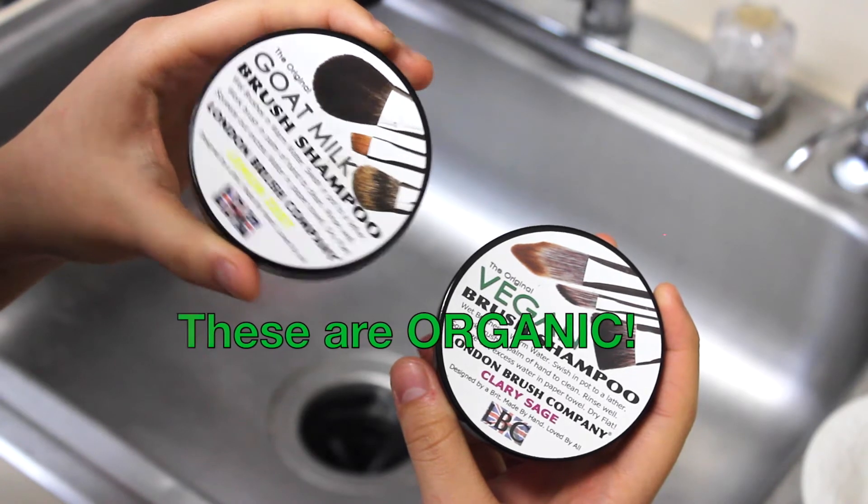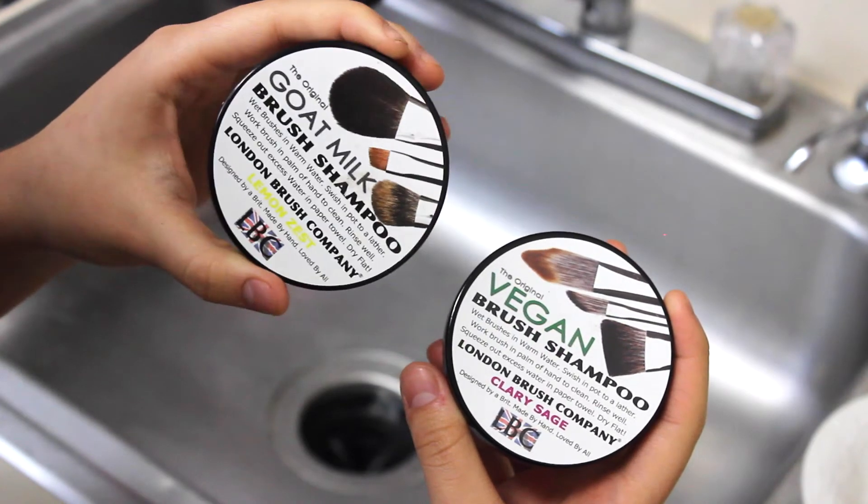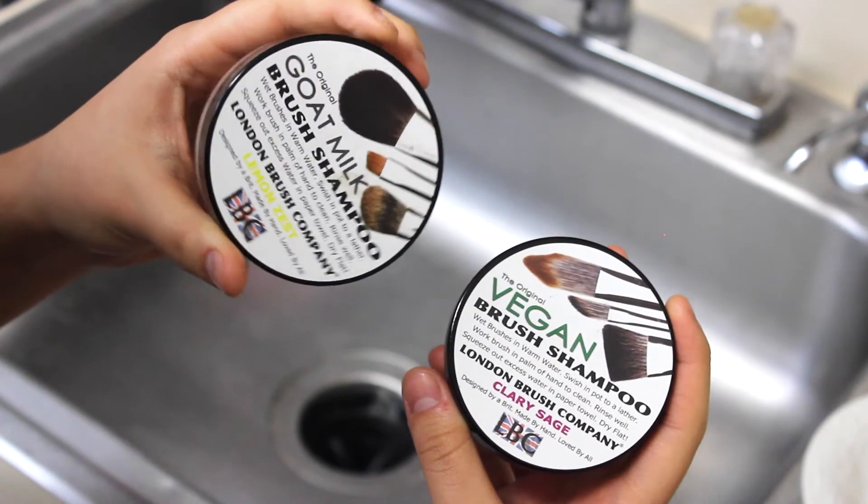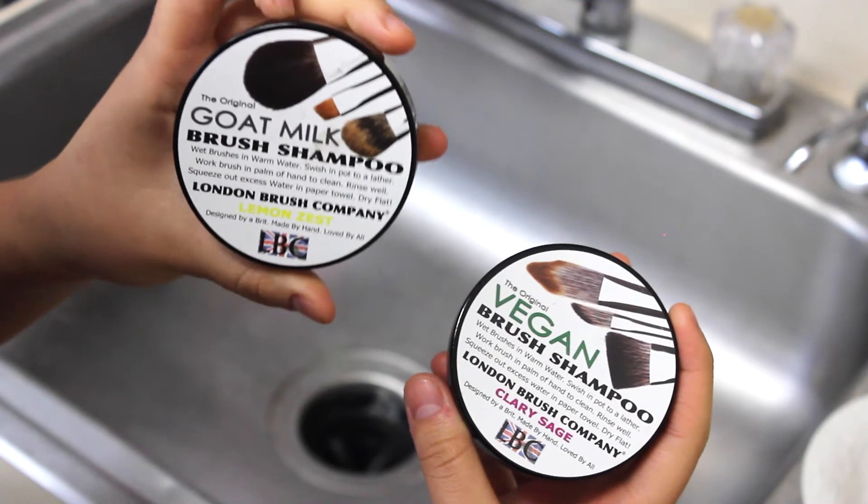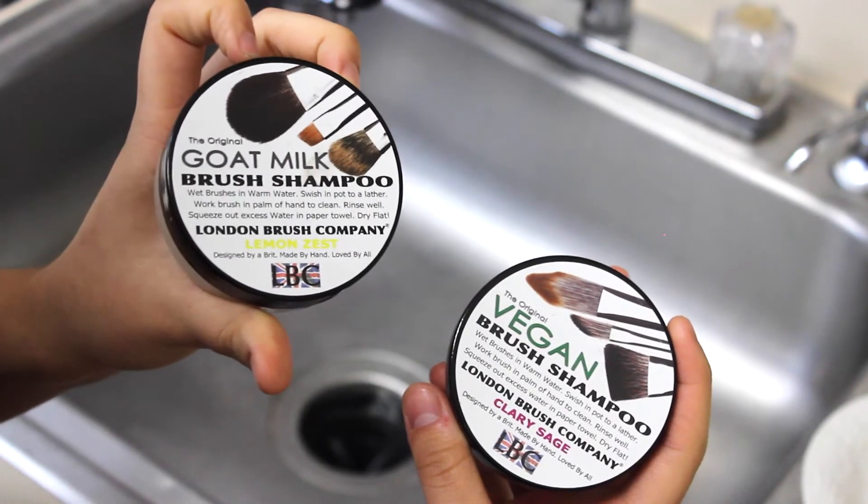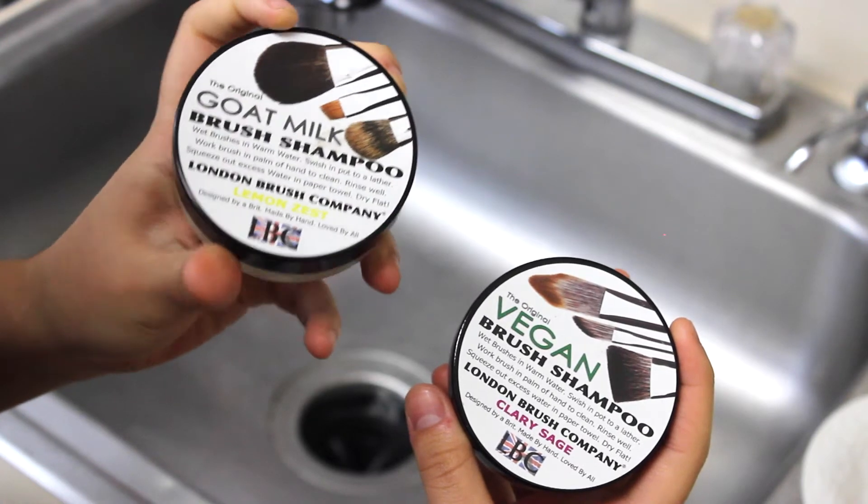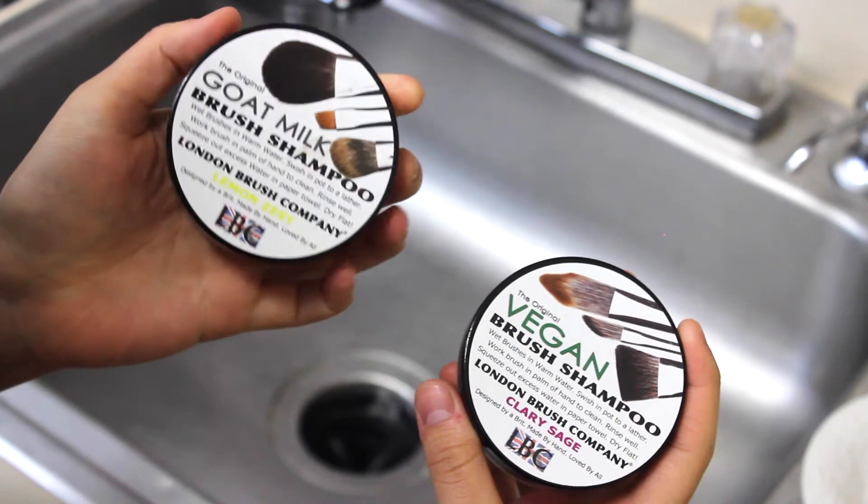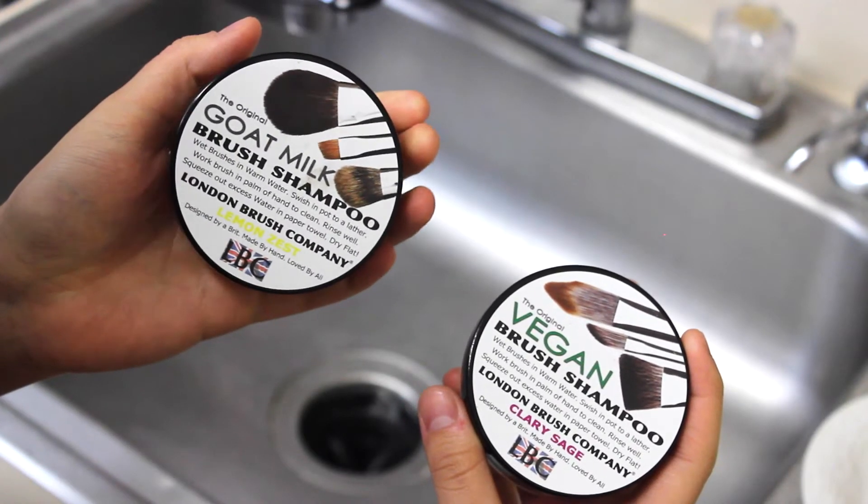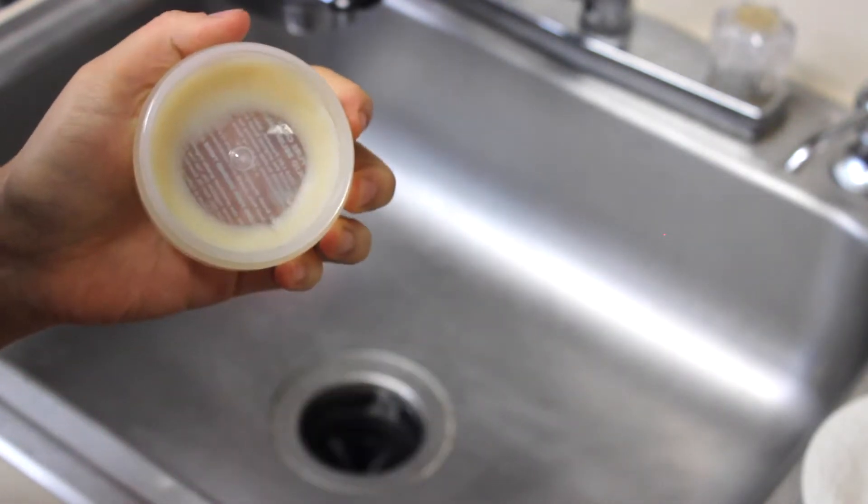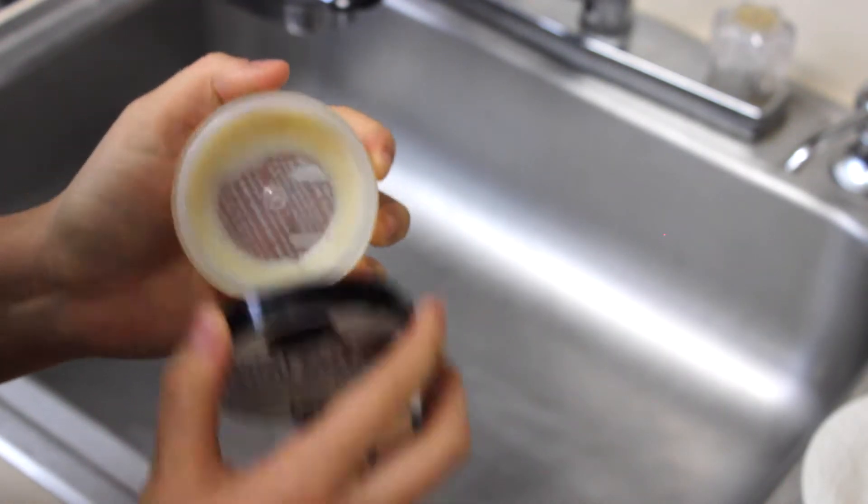They also have the vegan version as well and these are organic brush cleaners and I love them very much because they do it all. I don't need all these products to clean my brushes because they do it all. So this is my goat milk cleanser as you can see I'm almost finished with it.